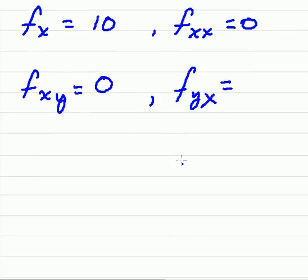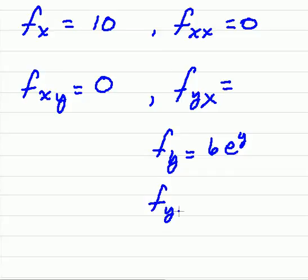I'm just rewriting it. So 6e to the y. Now we're going to take this with respect to x. And there are no x's here. Therefore, it's just considered to be a constant. So it's 0.